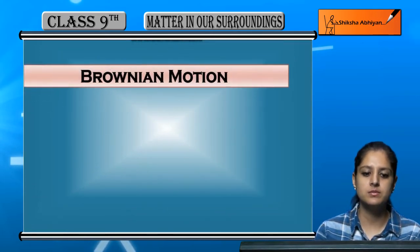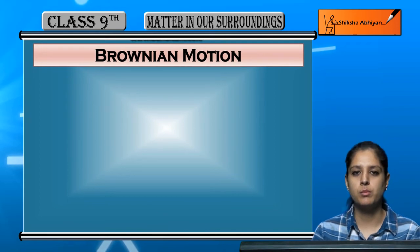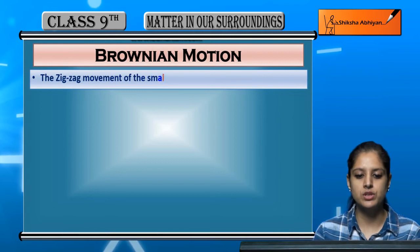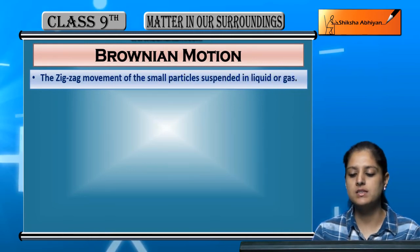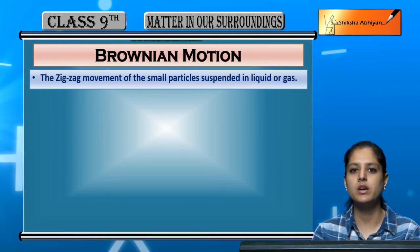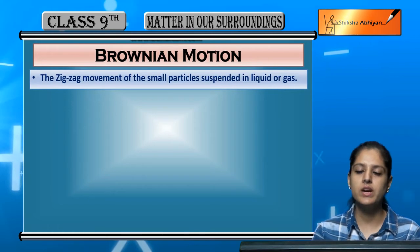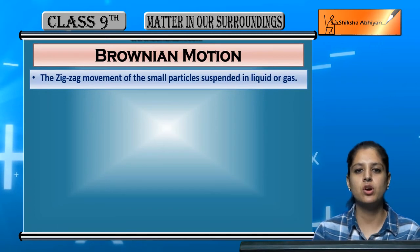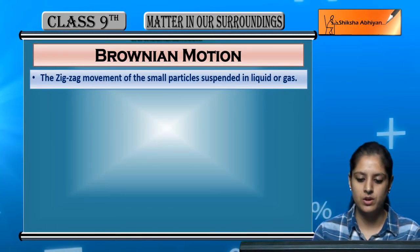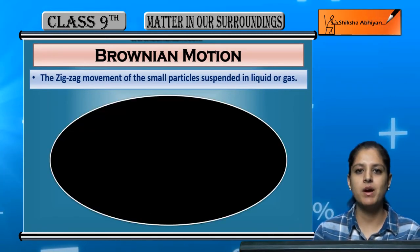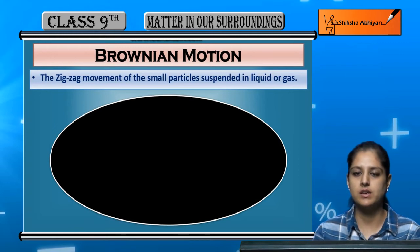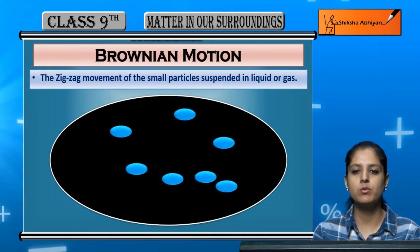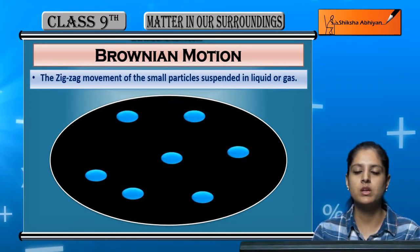Now the next property that we have is Brownian motion. What happens in Brownian motion? It is the zigzag motion of small particles suspended in a liquid or gas. In liquids or gases, tiny particles exhibit this type of zigzag motion. We call this Brownian motion.